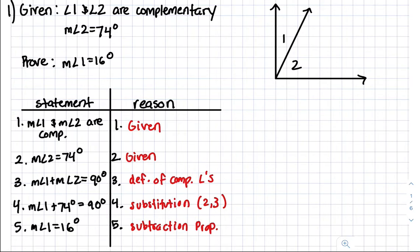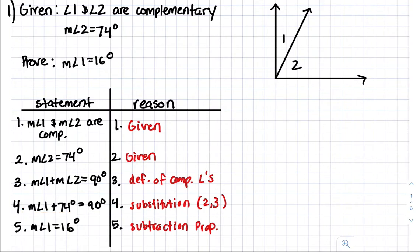How did we get statement 5? We looked at the equation and said: if we subtract 74 from both sides, we'll get measurement angle 1 equals 16. That's the subtraction property.